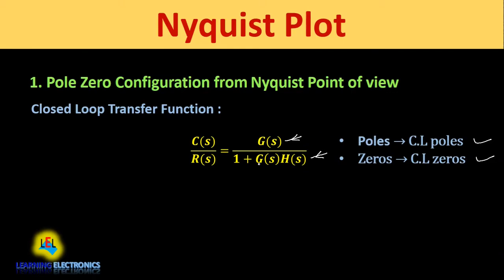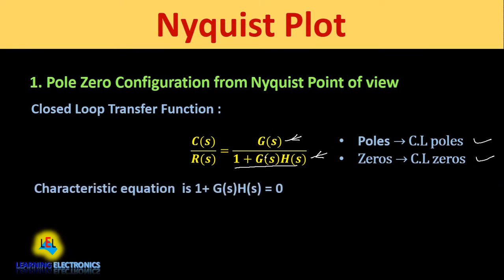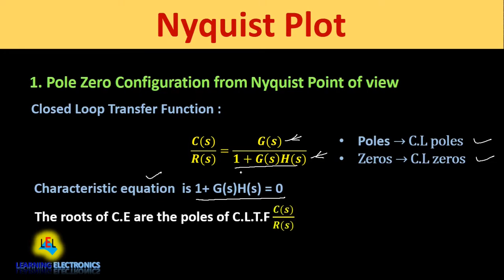From this equation we can see that the denominator of the closed loop transfer function is 1 + G(s)H(s). When we equate this denominator to zero, this equation is called as the characteristic equation. The roots of this characteristic equation are the poles of the closed loop transfer function, because we always find out poles of any transfer function by equating the denominator to zero. So the roots give us the closed loop poles of C(s)/R(s).